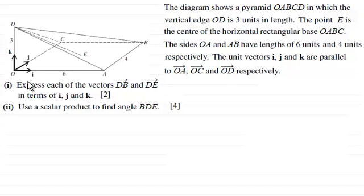And the sides OA and AB have lengths of six units and four units respectively. The unit vectors I, J and K are parallel to the vectors OA, OC and OD respectively.